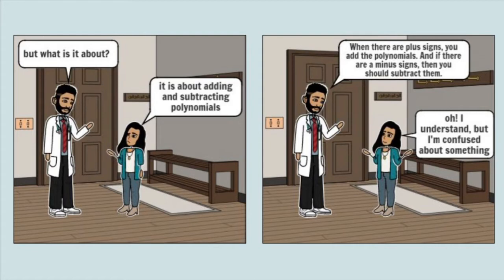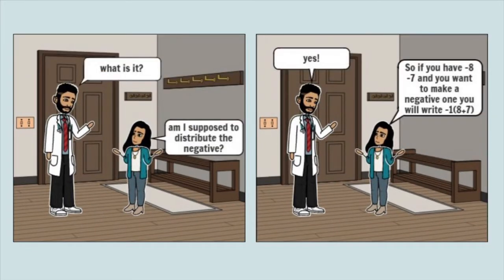Mizna's father started to explain the lesson and said, 'When there are plus signs, you add the polynomials, and if there are minus signs, then you should subtract them.' Mizna replied, 'Oh, I understand, but I'm confused about something.' Her father replied, 'What is it?' Mizna said, 'Am I supposed to distribute the negative?' Her father replied, 'Yes.'